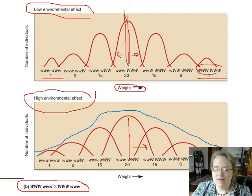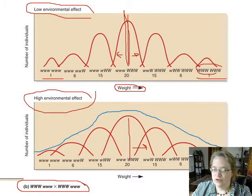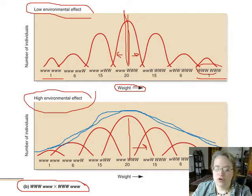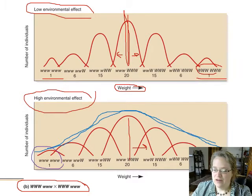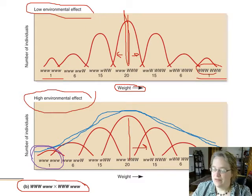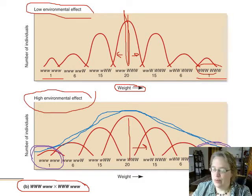Instead of having discrete traits, we have this nice curve. We can still zoom in on the extreme traits — the offspring with all recessive alleles showing the least, and those with all dominant stacking traits for weight showing the most. These extreme phenotypes are what we call the extreme traits, and we're going to use them to figure out some very important numbers later on.